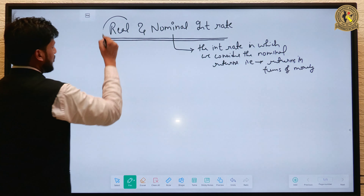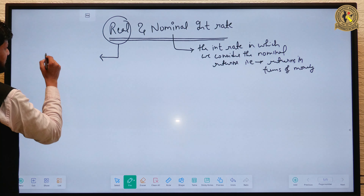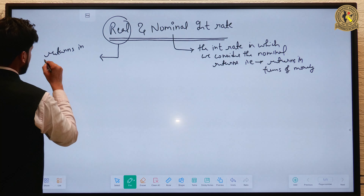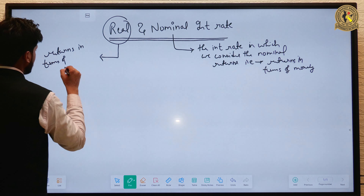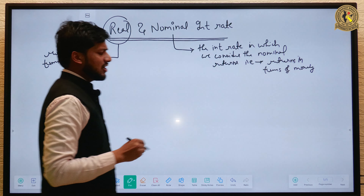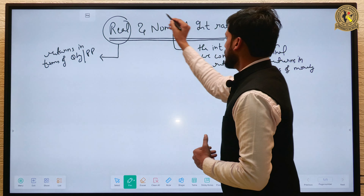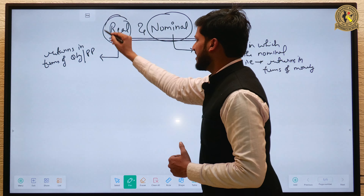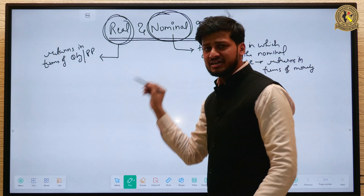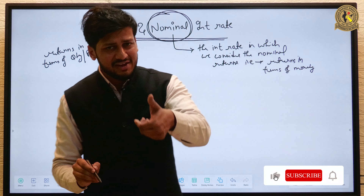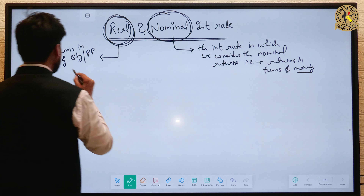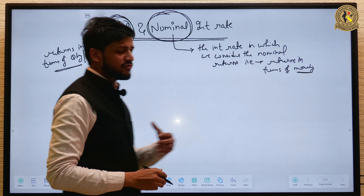Whereas real interest rate is the interest rate in which we consider returns in terms of quantity or purchasing power. So there are two kinds of rate of return: nominal interest rate, where we consider return in terms of nominal amount or money, and real interest rate, where we consider return in terms of purchasing power or quantity.